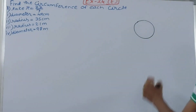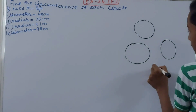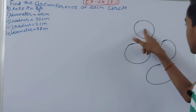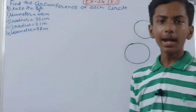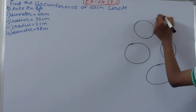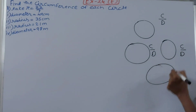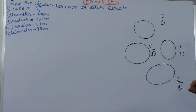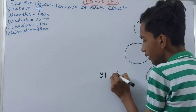Now, one thing we observe: if we have many circular objects, we find that the ratio of the circumference to the diameter — C upon d — is the same in all cases. In every case we will get a value between 3.1 and 3.2. That is the ratio between circumference and diameter.